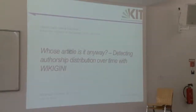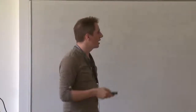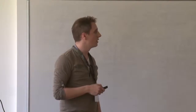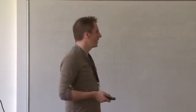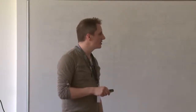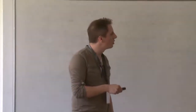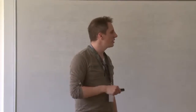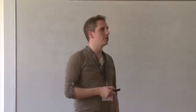The third talk is introduced: 'Whose Article Is It Anyway? Detecting Authorship Distribution Over Time with WikiJini.' There are three components: 'Whose article is it anyway?' refers to authorship — not ownership, since that's not allowed, but who authored most of the content. 'Distribution' covers how authorship is distributed across all editors. 'Over time' addresses how you can visualize and analyze how the article actually developed across its history.